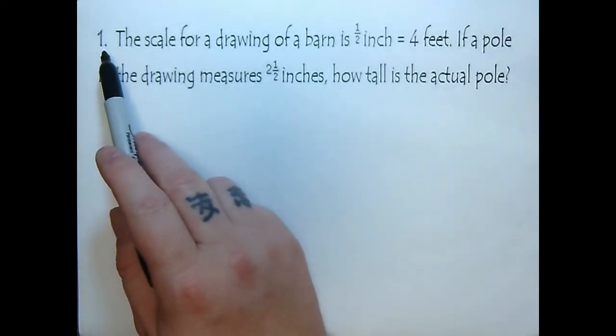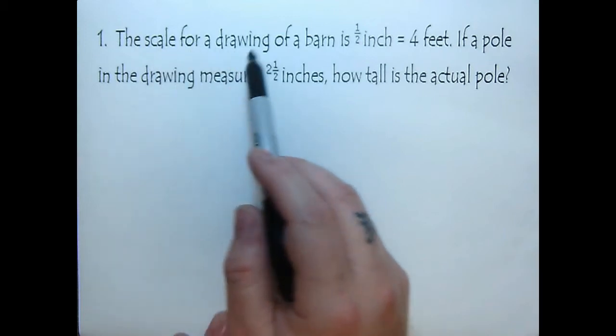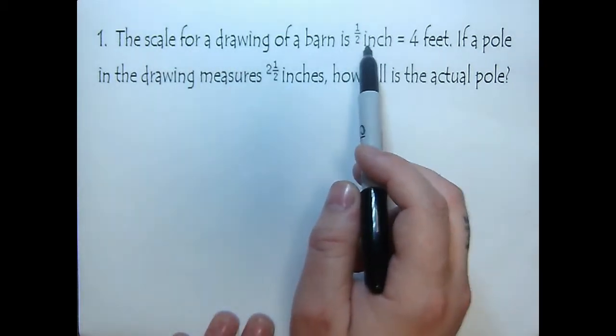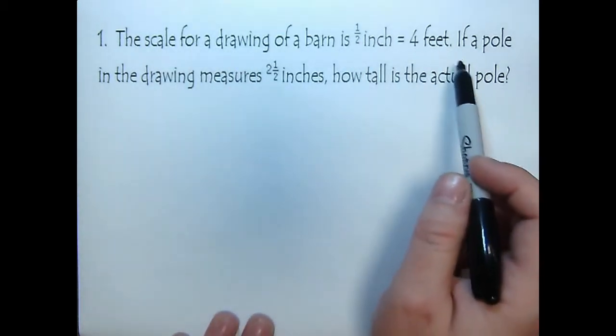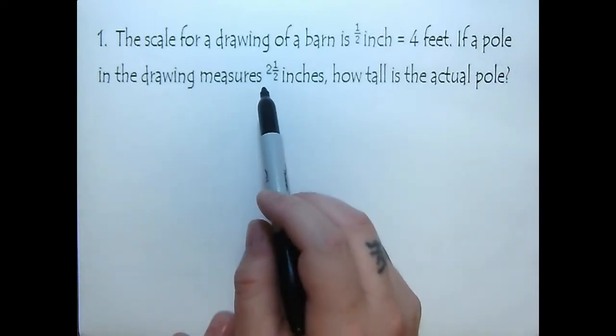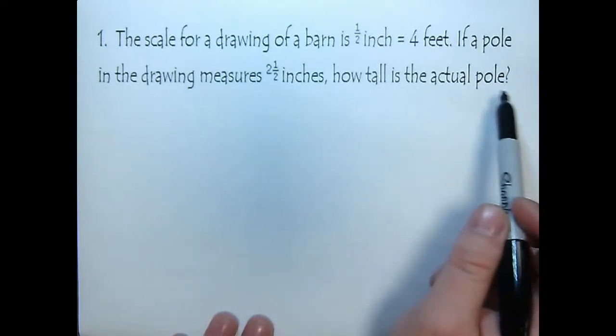In this problem it says the scale for a drawing of a barn is one half inch equals four feet. If a pole in the drawing measures two and one half inches, how tall is the actual pole?